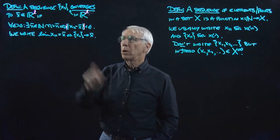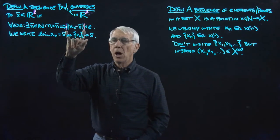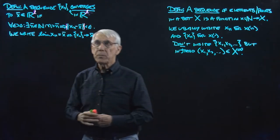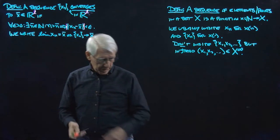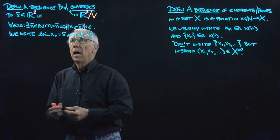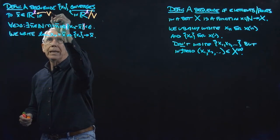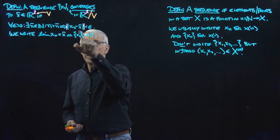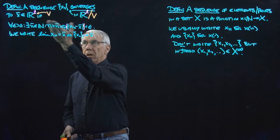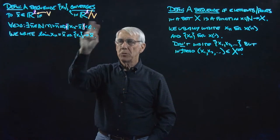Our definition, which we first wrote down for the real numbers, now turns out to be much more general. Of course, the first thing we wrote for R is a special case where l is one and the norm is just the absolute value. So this works fine for R^l. And of course, we know that we can define norms on vector spaces. So even if we have a vector space that's not R^l — maybe infinite dimensional — it's still the case that we could do this.